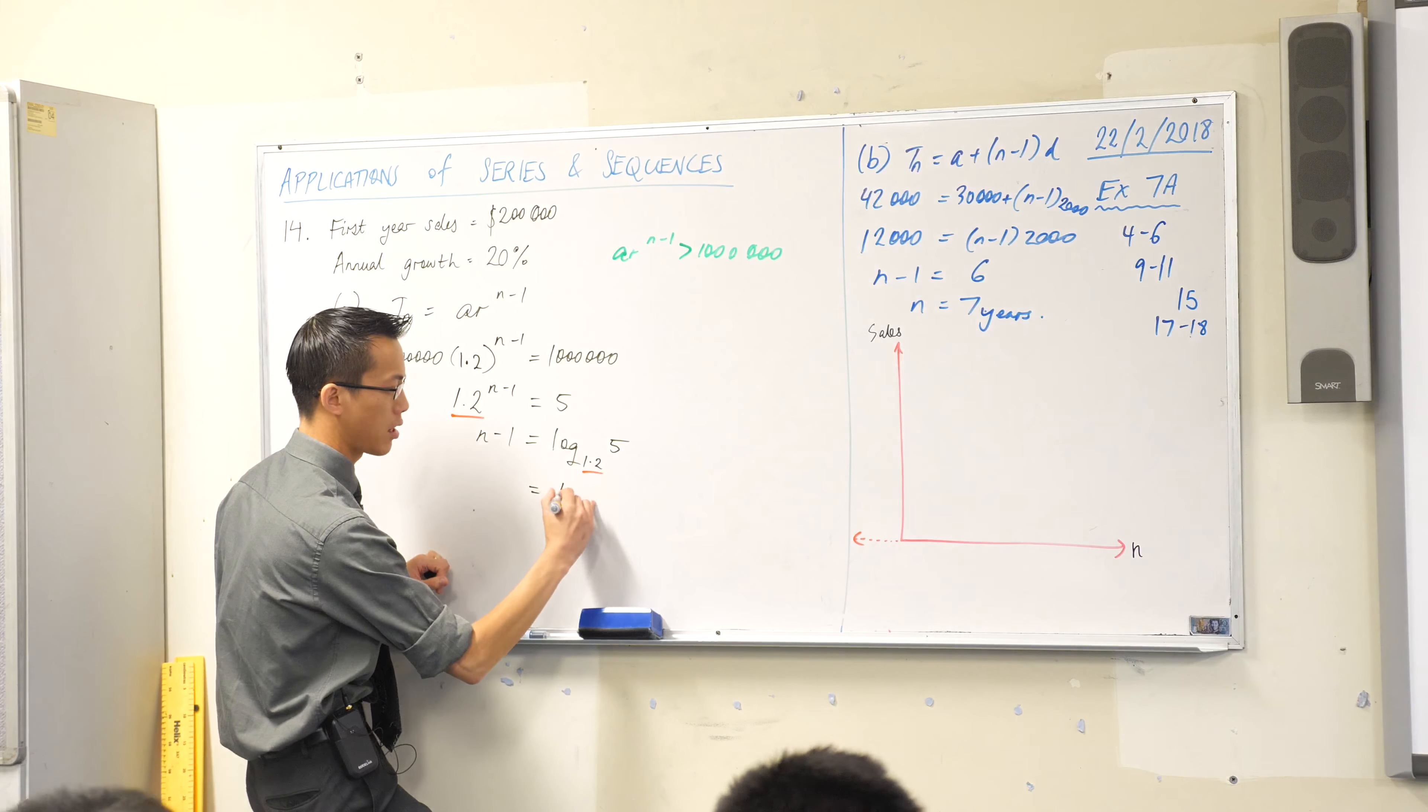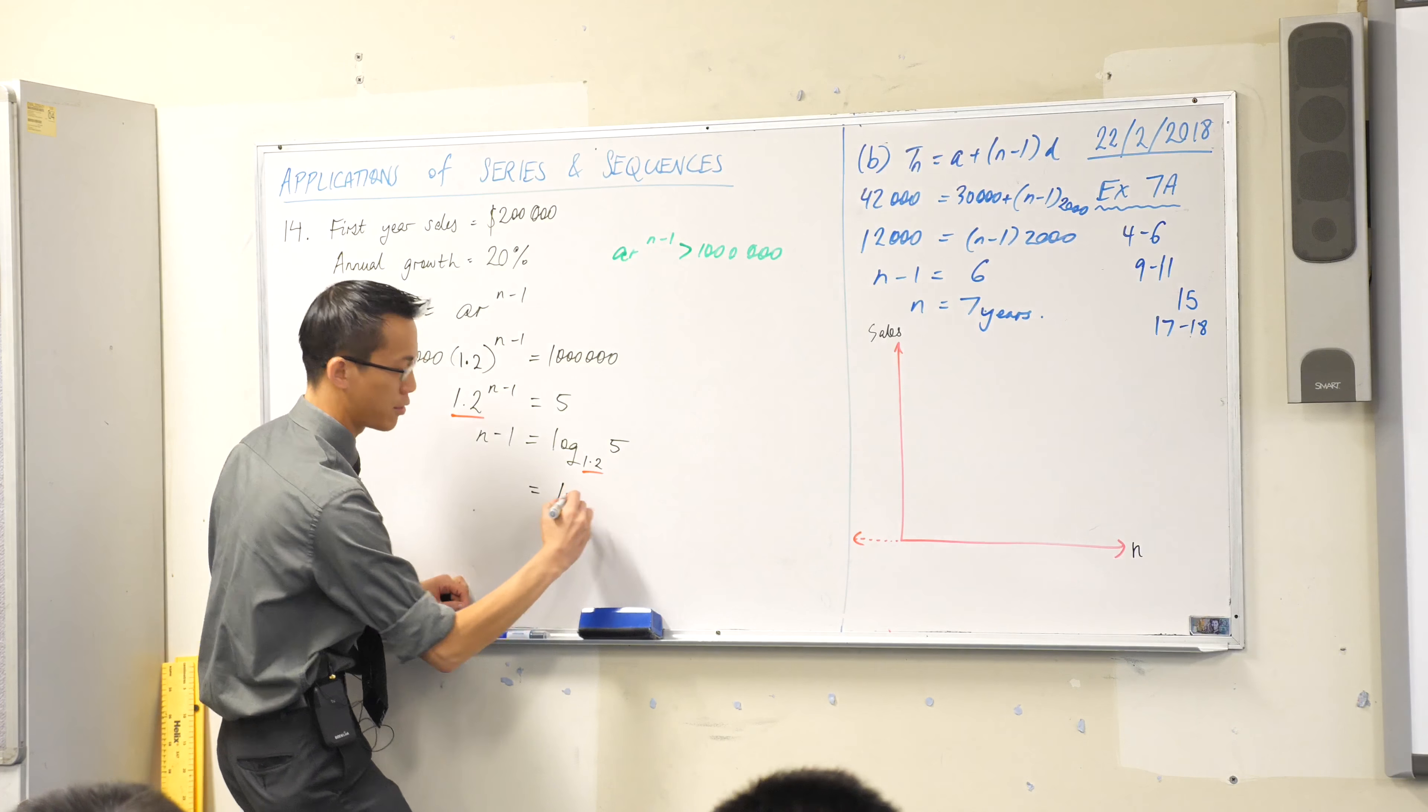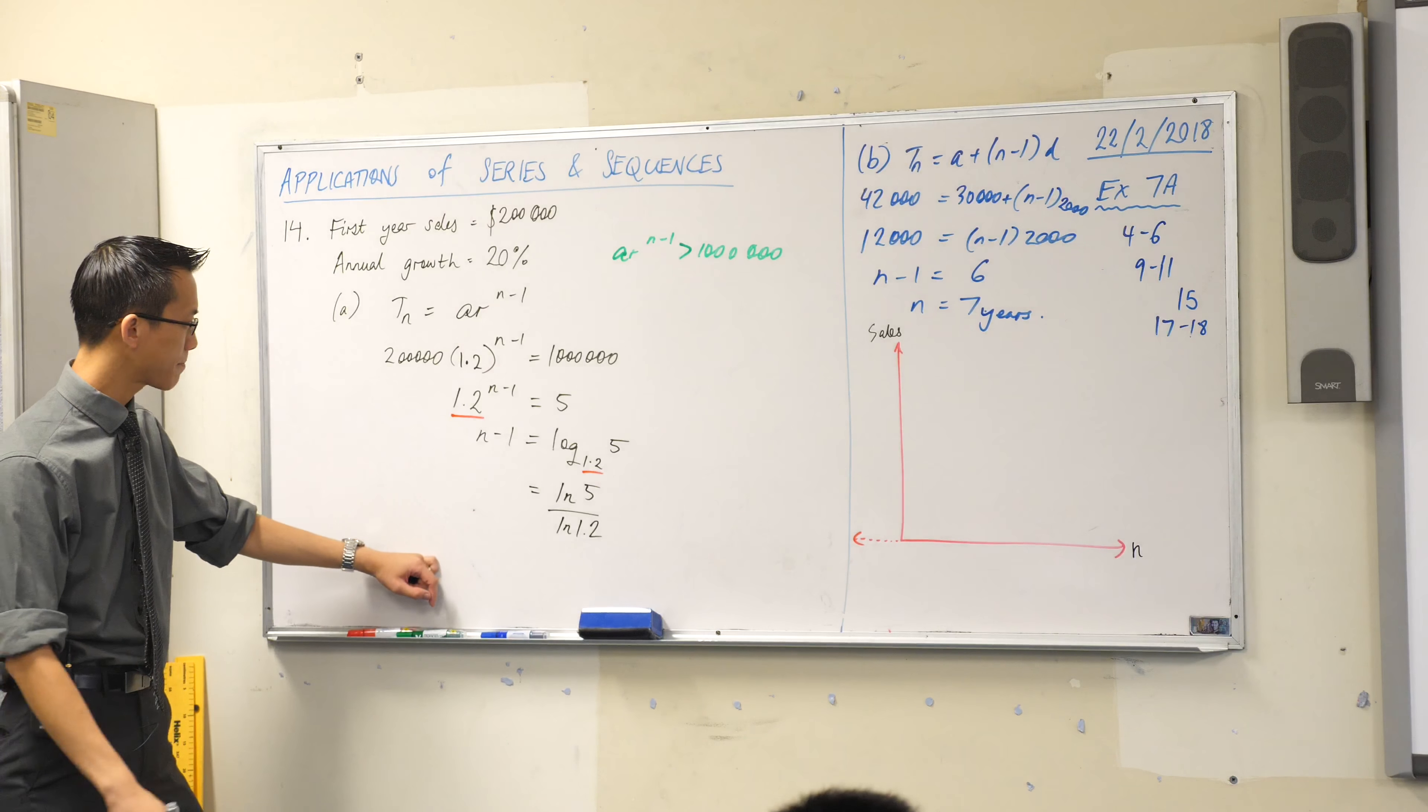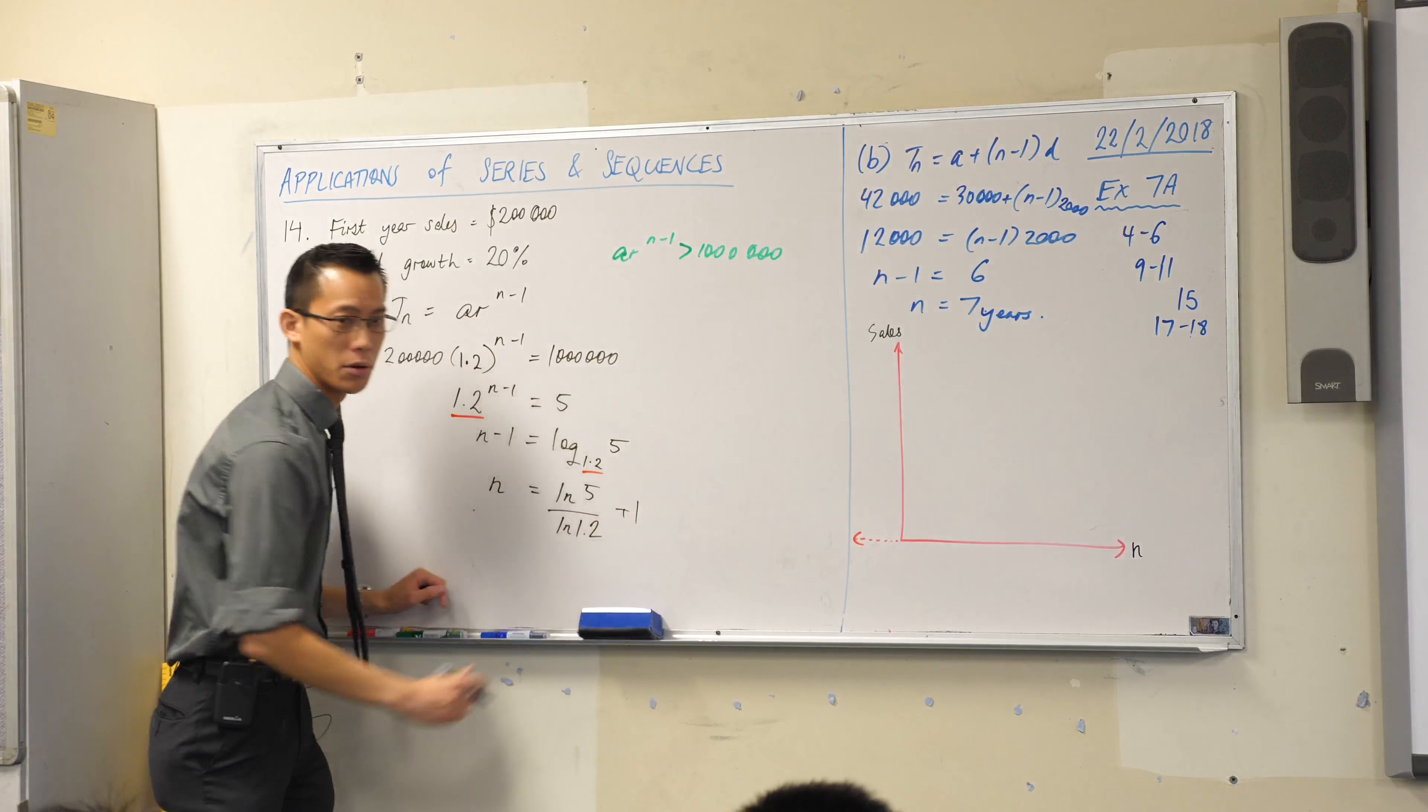So you've got your calculator there, what are you going to do with this to make it usable by your calculator? Yeah, change your base law. So you can choose any base you like, you've got base 10 and base e on your calculator. I am lazy so I'm going to write one letter less which is base e and I've got the 5 on the top and the 1.2 on the bottom. I don't actually want n minus 1, I want n. So I will add one to both sides.